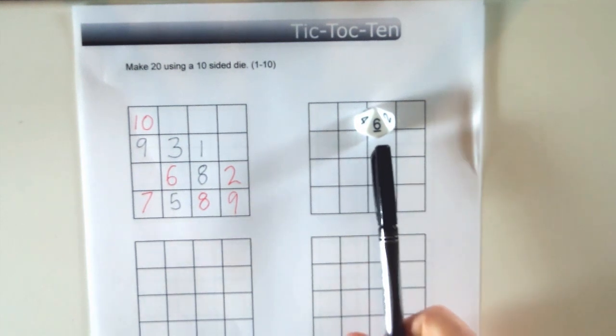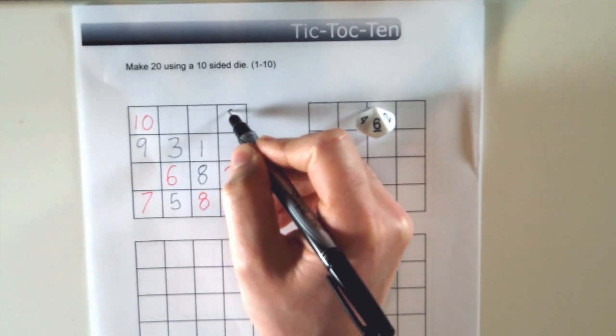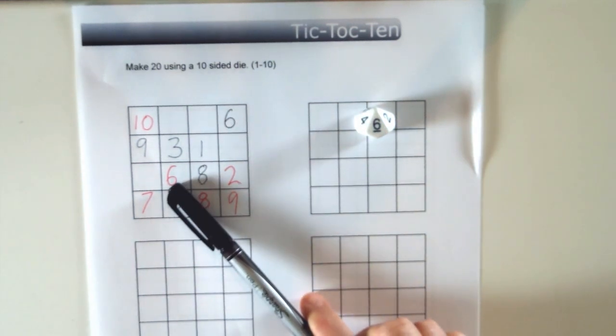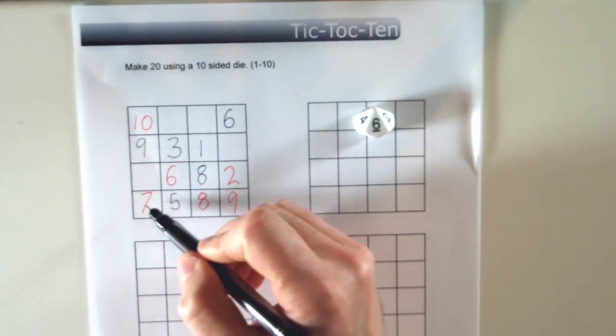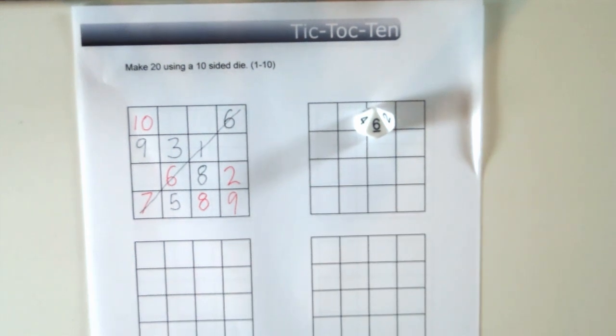So player 2 has just rolled a 6. They can put the 6 here. And then they've got 7 plus 6 is 13, plus 1 is 14, plus 6 is 20. So player 2 has made 20 by going diagonally. And that's how you play.